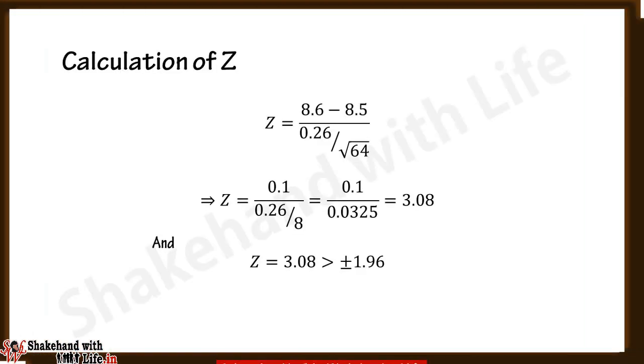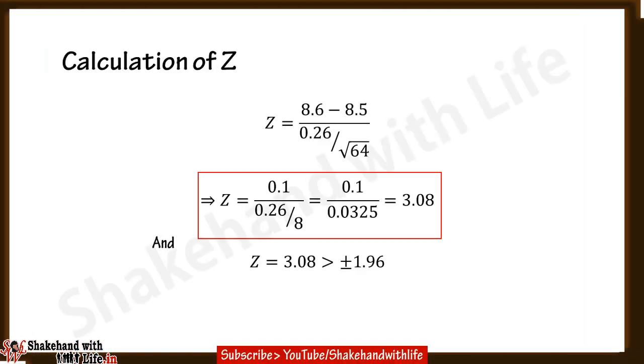Now put the values of x̄ and μ₀ in the numerator, and the values of σₚ and n in the denominator, and calculate Z. After processing the Z statistic you will get the value of Z equal to 3.08.